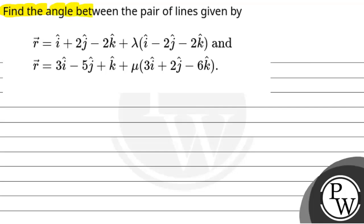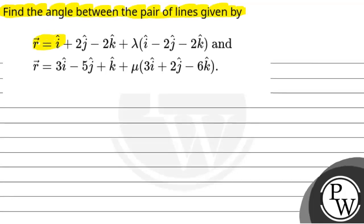The question says find the angle between the pair of lines given by vector r is equal to i cap plus 2 j cap minus 2 k cap plus lambda multiplied by i cap minus 2 j cap minus 2 k cap